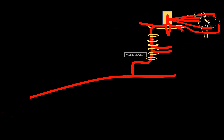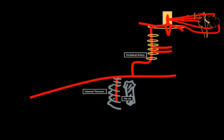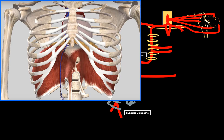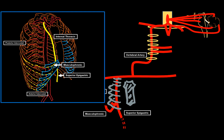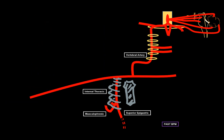Next is the internal thoracic artery. It descends along the anterior wall of the thoracic cavity, and as it reaches the seventh rib, it divides into two terminal branches: the superior epigastric artery, which passes the diaphragm at the sternocostal triangle and communicates with the inferior epigastric artery; and the musculophrenic artery, which terminates at the lower 5–6 intercostal spaces as anterior intercostal branches, communicating with the posterior intercostal arteries of the thoracic aorta.